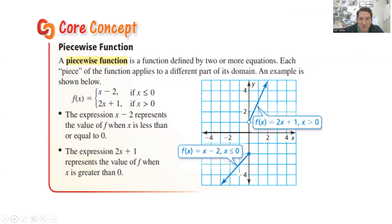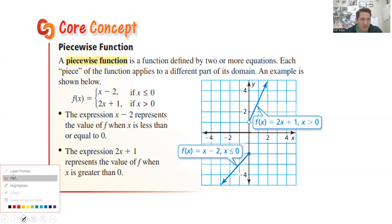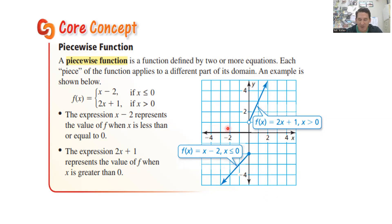Getting into what a piecewise function is — it is a function split into pieces. Here is an example of a piecewise function. You can see we have this part down here and then it splits up to this part here. The split always happens on a vertical line; it's not always the y-axis. This example has the split happening at the y-axis, but it can be at any vertical line anywhere.